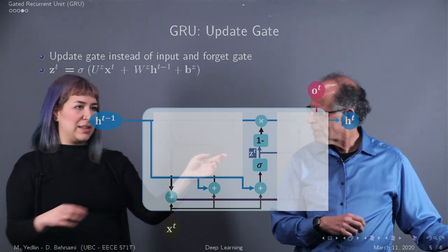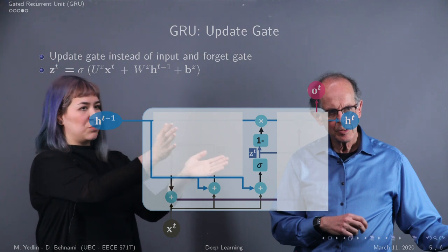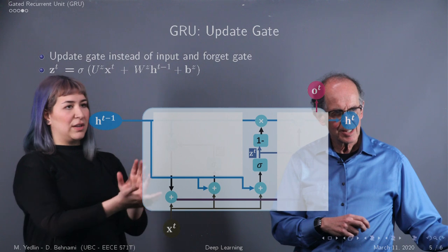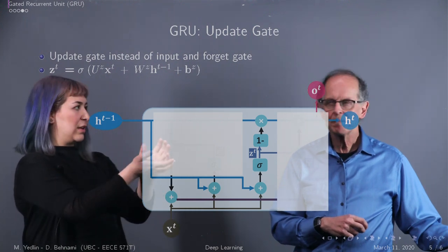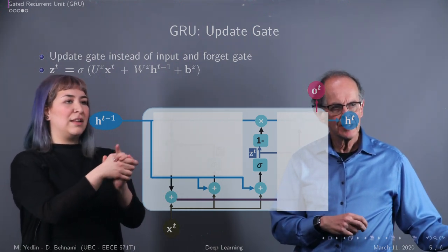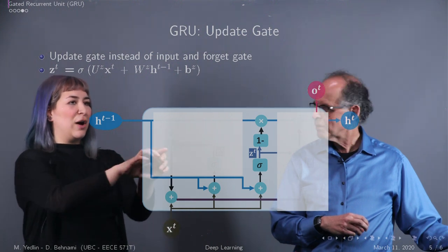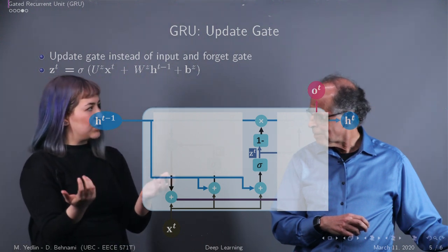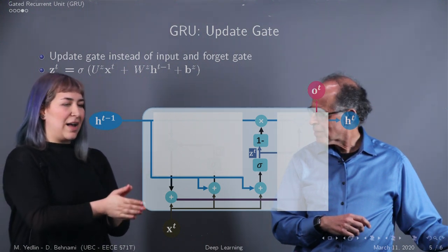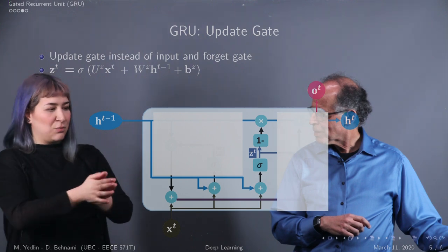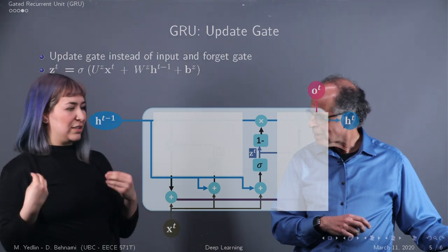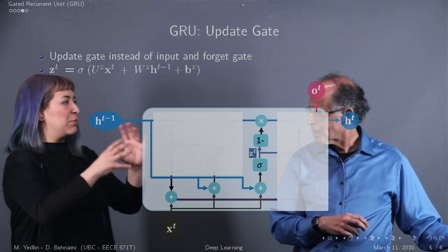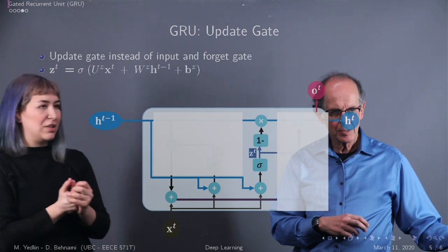You'll see where the Z of T as we go further, it splits into two branches. One branch contributes to the candidate value that's going to help with the H of T calculation. And then another branch is fed into this block that says one minus and essentially going back to what you were saying in terms of weighted average calculations, what it does is it determines how much information is remembered or essentially taken in from the new input and one minus that amount is going to be whatever we want to get rid of. So hence the whole weighted average concept.